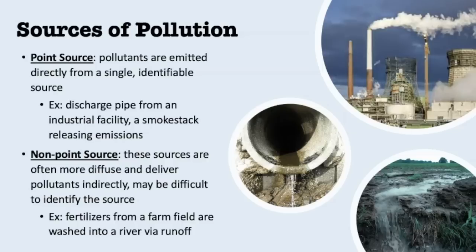There are two vocabulary terms you need to understand and be able to identify. Point source pollution is pollution emitted directly from a very identifiable source — it often comes out of a pipe. For example, a smokestack is a point source: you can literally point at it and say that is where the pollution is coming from. Similarly, an outflow pipe at an industrial facility is easily identifiable as a point source. You can literally point at right where it is coming out.